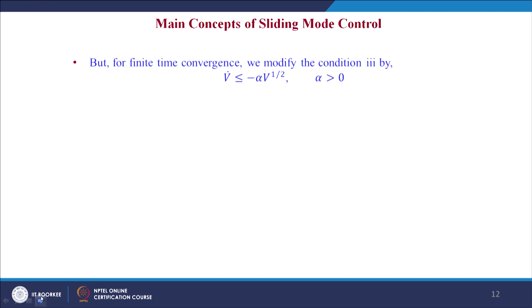But for finite time convergence, we modify condition 3 by taking V̇ ≤ -αV^(1/2), where α is a positive constant. Thus, instead of V̇ ≤ 0, we take this stronger condition so that we confirm finite time convergence — that is, V̇ ≤ -αV^(1/2) leads to finite time convergence.